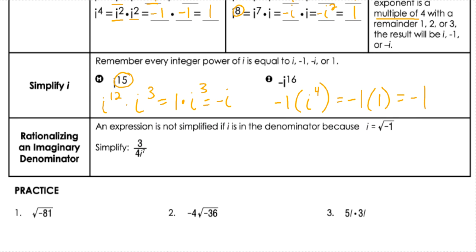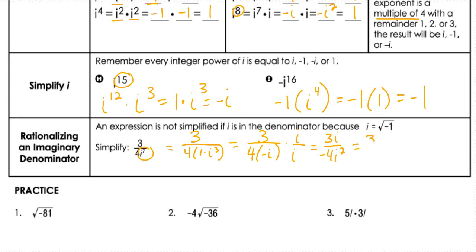The last thing we need to understand is that we don't want imaginaries in the denominator, so we need to simplify that. Leave the 3 and the 4 alone — i to the 7th. That is going to be i to the 4th with a remainder of 3, so that's going to be 1 times i to the 3rd. When I simplify that, 1 times i to the 3rd is negative i. So to get rid of that, I'm going to multiply by i over i, just like we did with radicals. That gives me 3i over negative 4i squared. We know i squared is negative 1, so that makes it just positive 4 on the bottom — getting rid of that imaginary in the denominator.